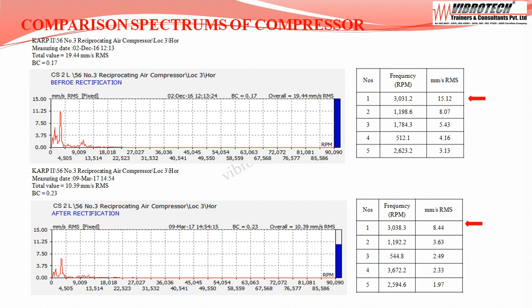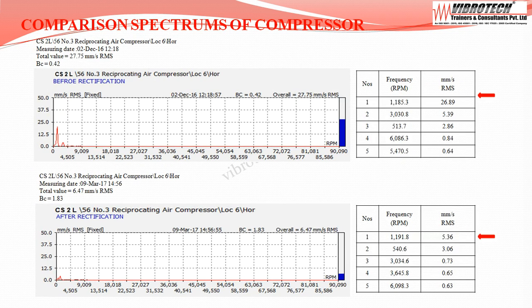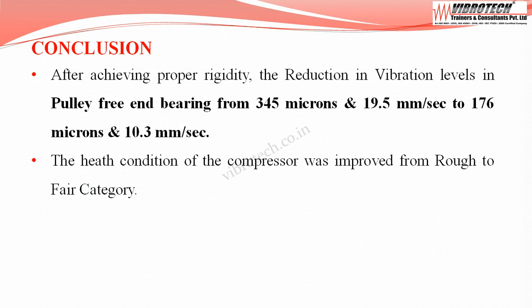Going through the comparison spectrum at pulley free end bearing, a reduction in overall vibration levels from 345 microns peak to peak was observed. At the low pressure cylinder, reduction in overall vibration from 27.75 mm/s rms to 6.47 mm/s rms was achieved. After achieving proper rigidity, the reduction in vibration levels at pulley free end bearing went from 345 microns peak to peak and 19.5 mm/s rms, down to 176 microns peak to peak and 10.3 mm/s rms. The health condition of the compressor improved from rough to fair category.